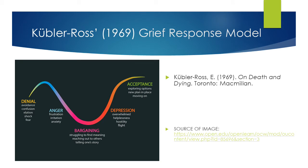Kubler-Ross' 1969 grief response model, which was originally developed to explain responses to terminal illness, has commonly been used in early psychology of sport injury research. The model is comprised of five stages: denial, anger, bargaining, depression, and acceptance. It is suggested that following injury, all athletes progress through each of the five stages in order.